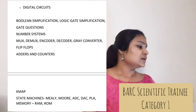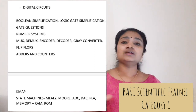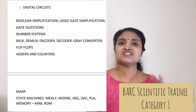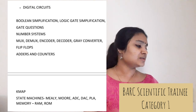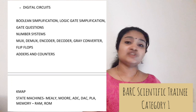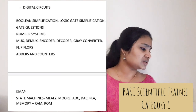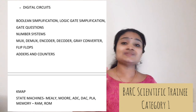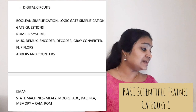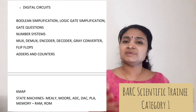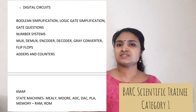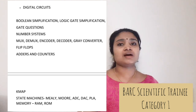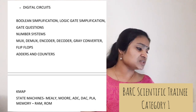Digital Circuits is again a very important subject. Cover Boolean simplification, logic gate simplification, Boolean expressions, number systems, encoders, decoders, Gray code converters, flip flops, adders, and converters. K-map is a must. Also study basics of state machines — Mealy and Moore types. ADC and DAC bit-related numerical questions and resolution-related questions are important. PLA and memory types — RAM, ROM and various memory types — are also important.